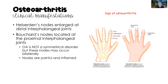There are two different types of nodes we will see with osteoarthritis. The first is Heberden's nodes — these are enlargement at the distal interphalangeal joints, which you can see in the picture. We also have Bouchard's nodes, located at the proximal interphalangeal joints. Osteoarthritis is not a symmetrical disorder, but these nodes may occur bilaterally, so we might see them on both sides of the body.